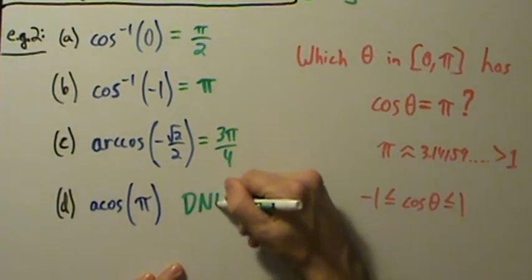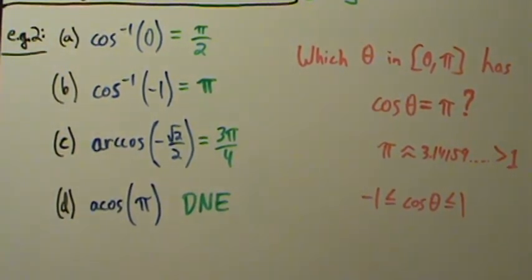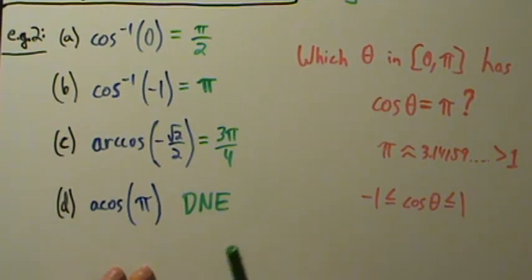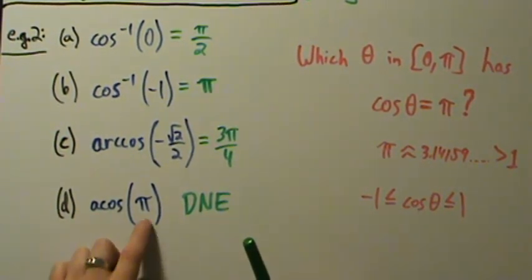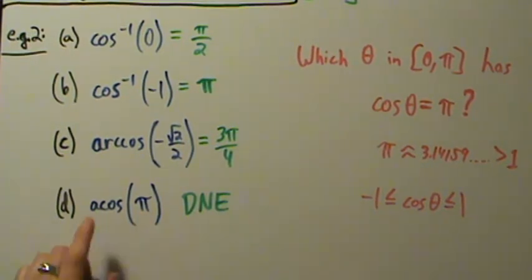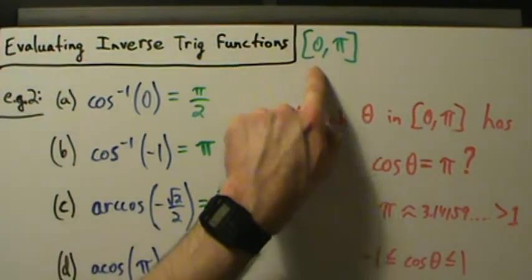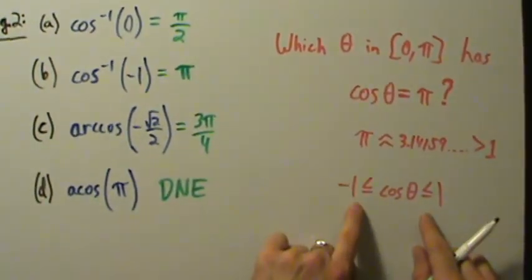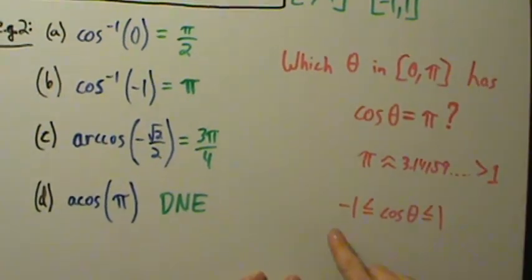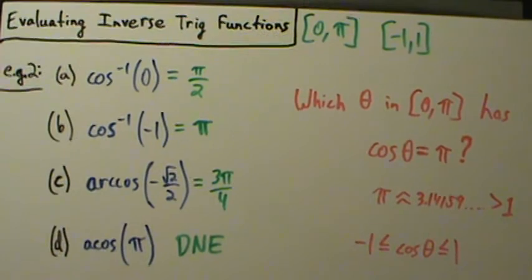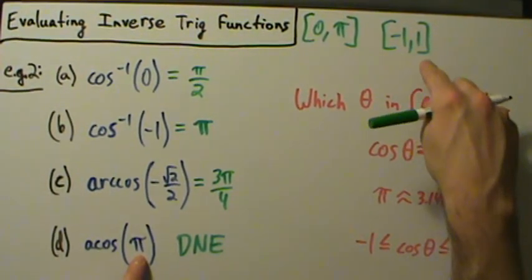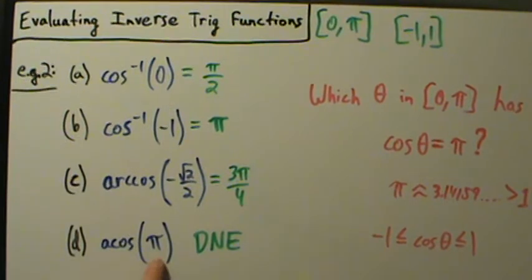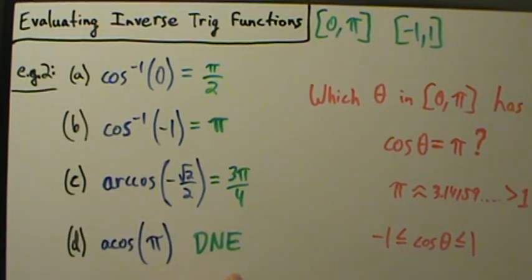So the answer is DNE — does not exist. Another way to see this: the domain of the inverse cosine function is negative 1 to 1, which matches the range of the cosine function. Since pi is outside of the domain of the inverse cosine function, we simply cannot evaluate it there. This number is outside the domain, so the expression does not exist — no solution.